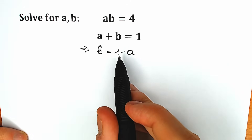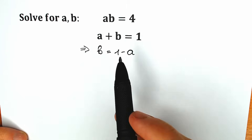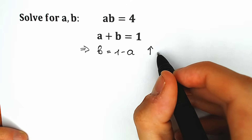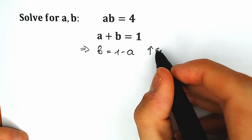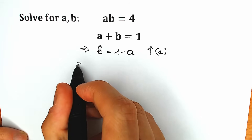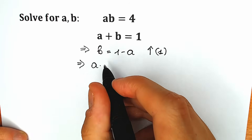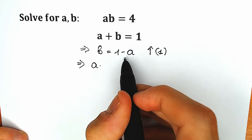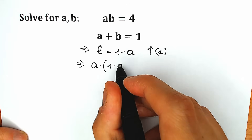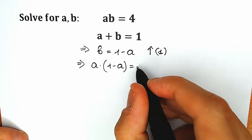Now let's plug in this 1 minus a instead of b in the first equation. So we're going to plug this into the first equation. As a result we have a times (1 minus a) equal to 4.